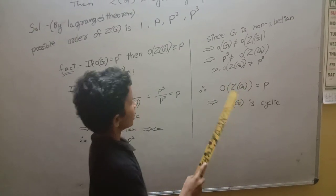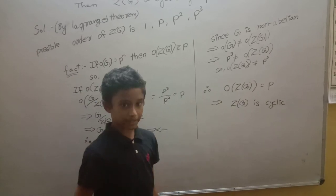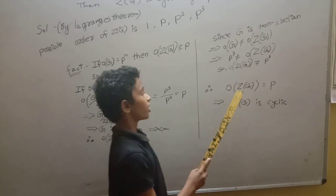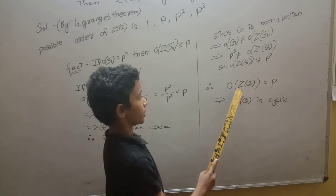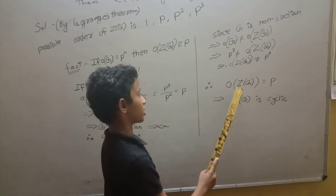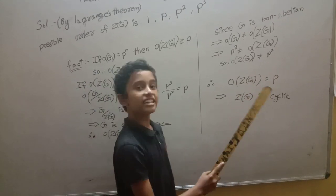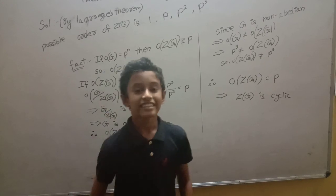Any group of order P is cyclic. According to that theorem, if the order of Z of G is equal to P, then Z of G is cyclic. Hence proved.